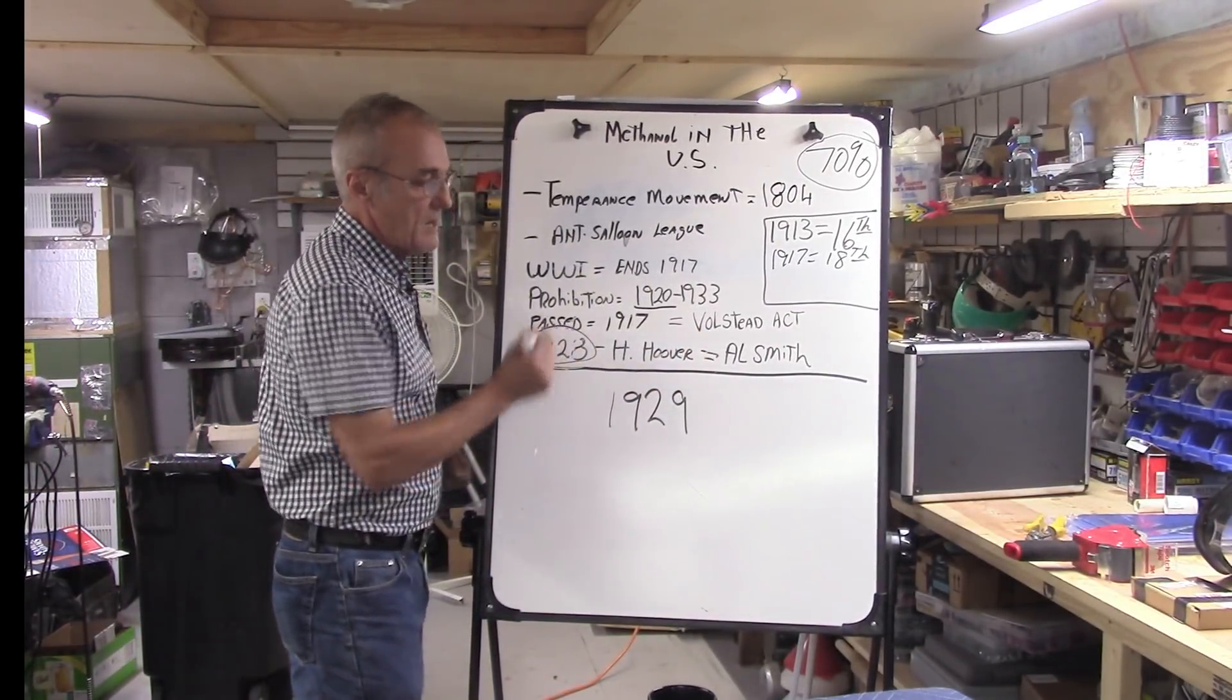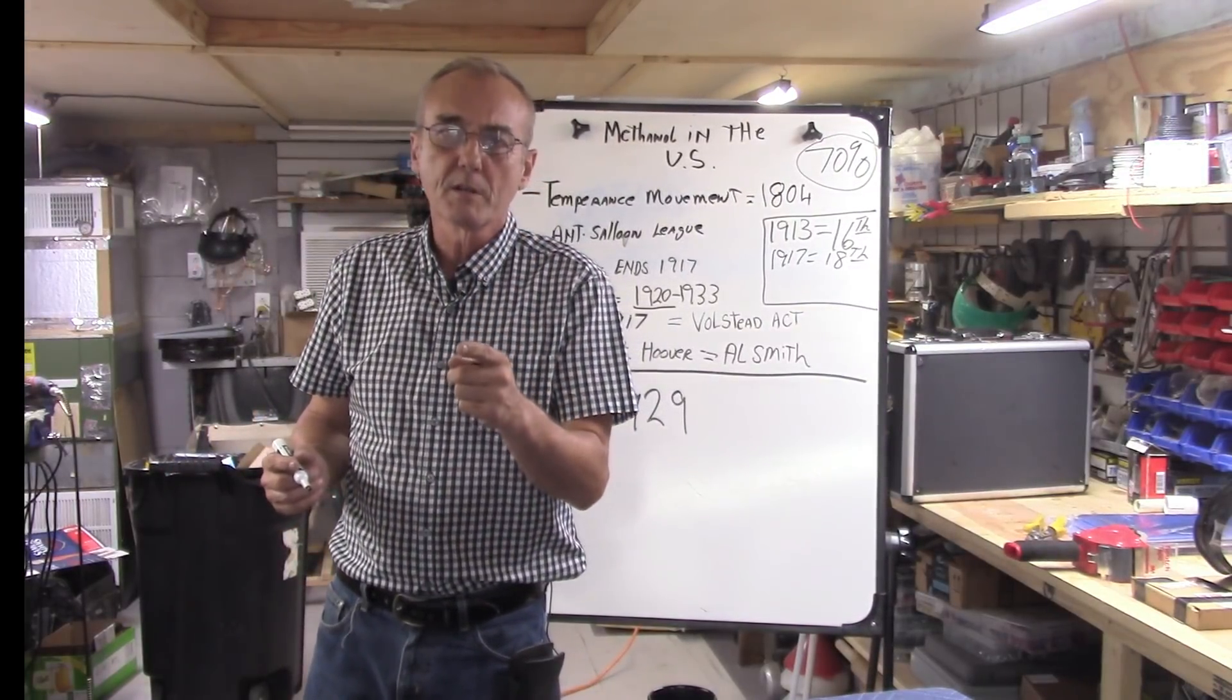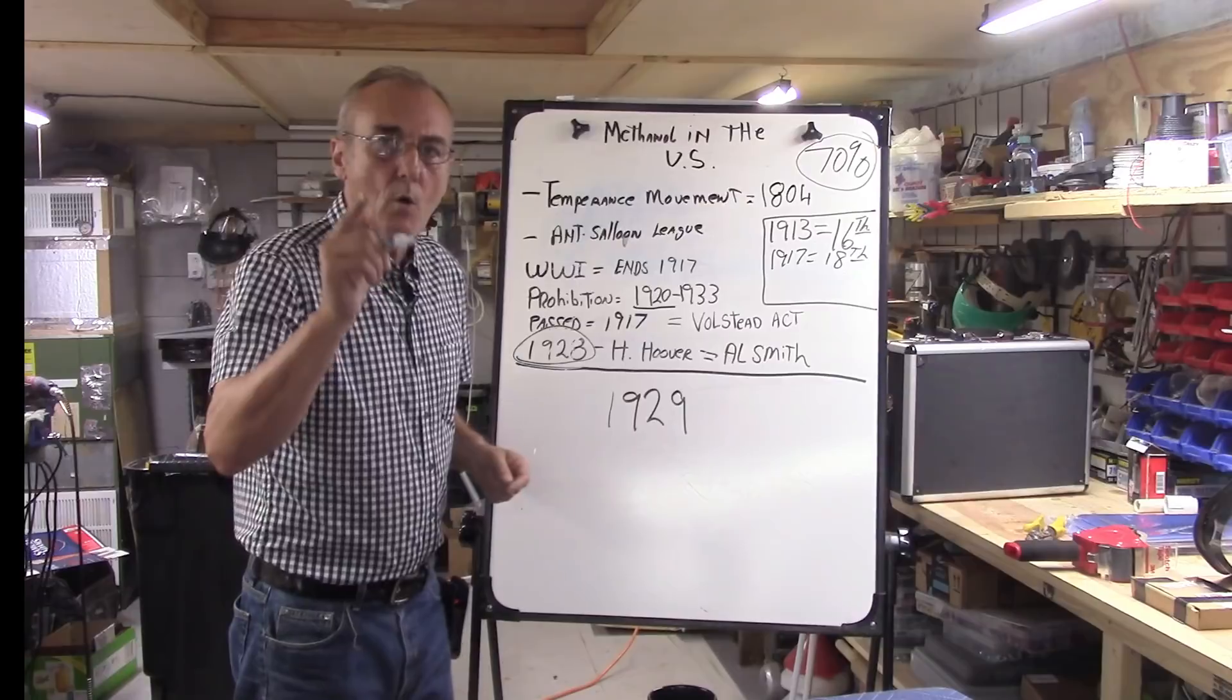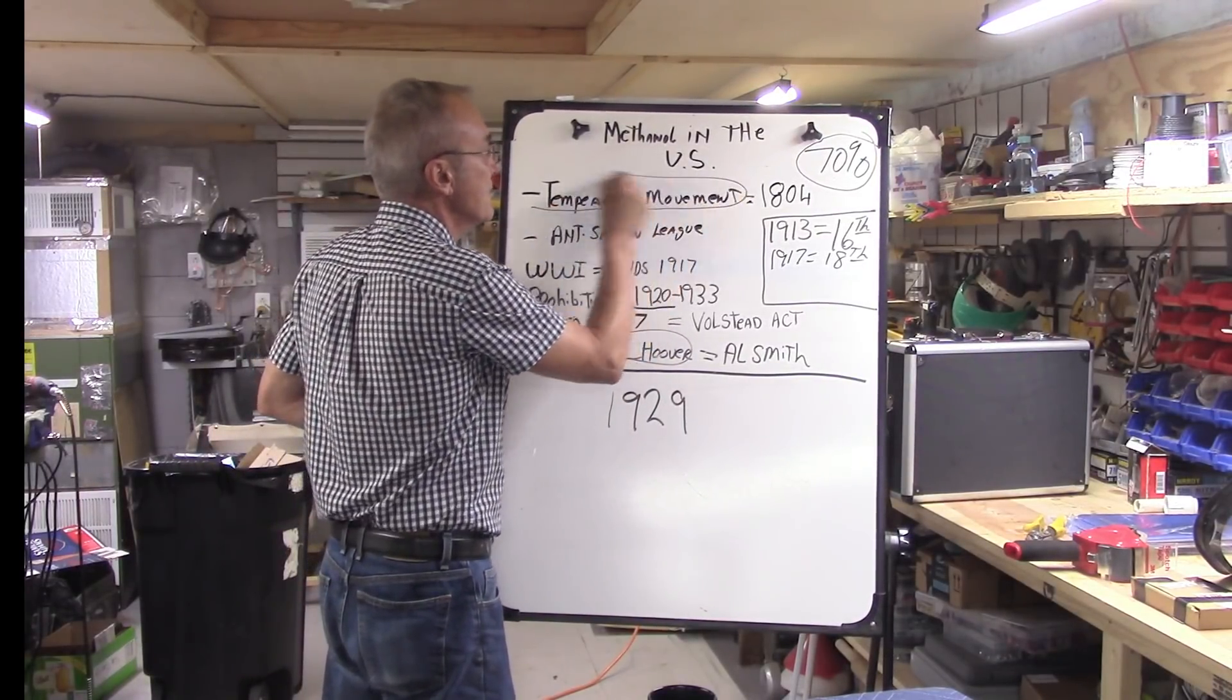In 1928, Herbert Hoover beat Al Smith in the election for President of the United States. What's well known is that Herbert Hoover was a temperance movement supporter.